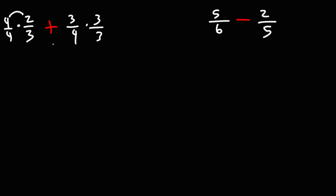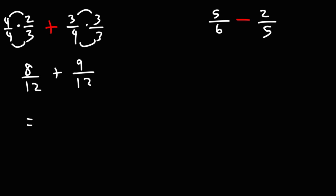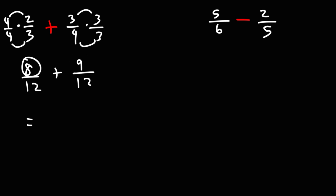So now we can multiply across: 4 times 2 is 8, 4 times 3 is 12, 3 times 3 is 9, and 4 times 3 is 12. Now that we have the same denominator we can add the numerators of the two fractions. 8 plus 9 is 17, so the answer as an improper fraction is 17 over 12.